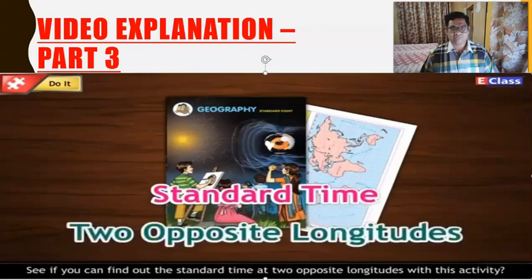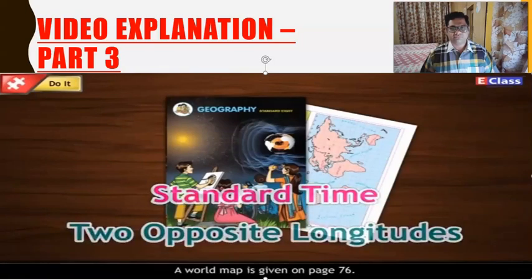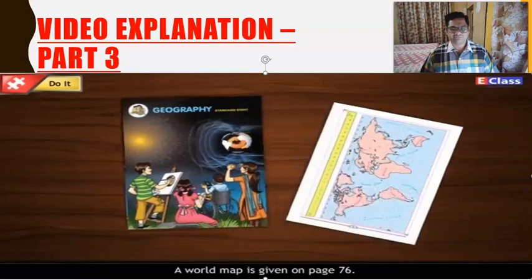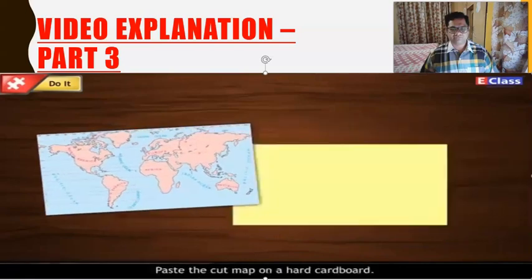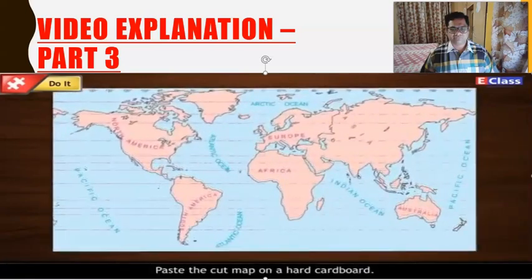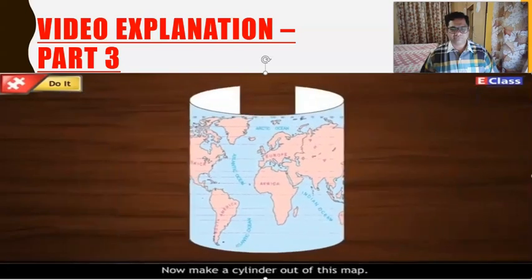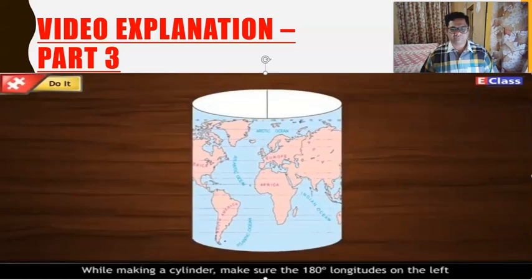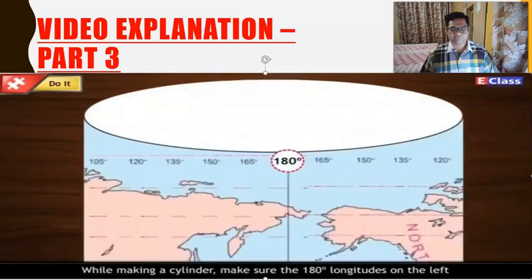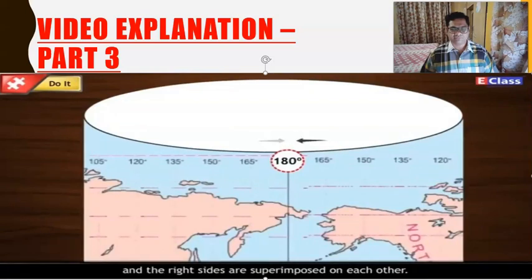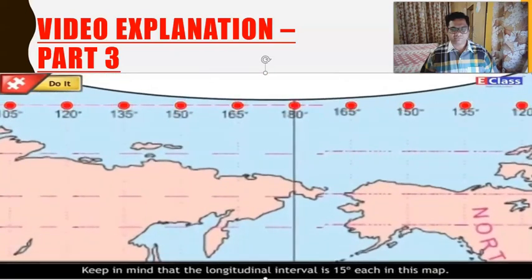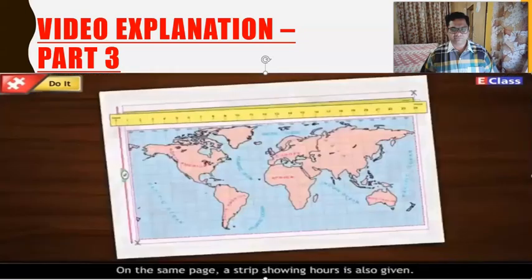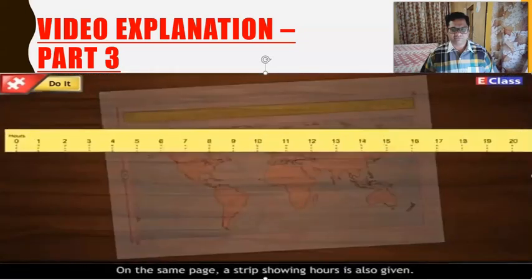Carry out the activity given on pages 75 and 76 and understand the standard time of various locations — see if you can find out the standard time at two opposite longitudes. A world map is given on page 76. Cut it along the dotted lines and paste the cut map on hard cardboard. Now make a cylinder out of this map. While making the cylinder, make sure the 180-degree longitudes on the left and the right sides are superimposed on each other.